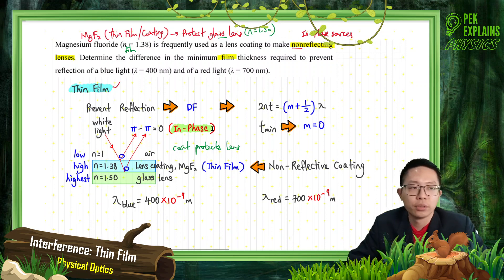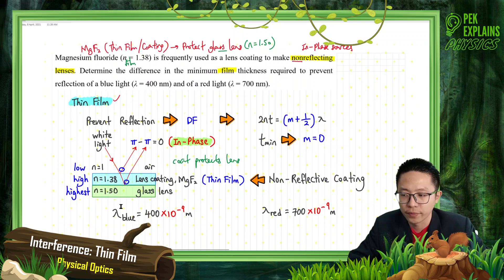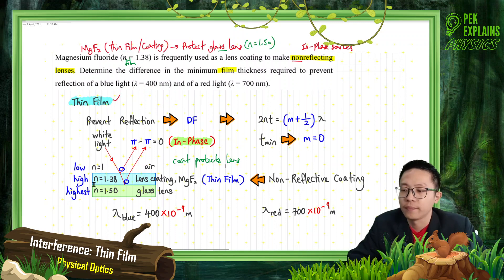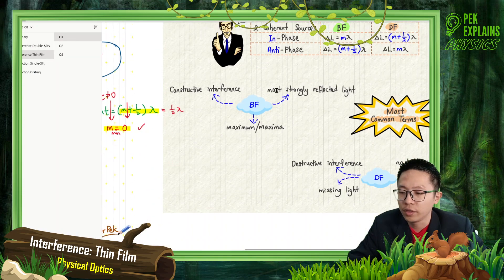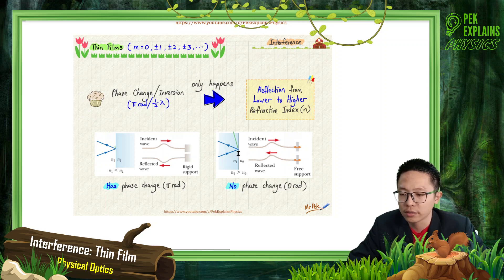So we know the glass lens normally has refractive index 1.50, so the bottom layer is 1.50. This is the low-high-highest category. Because of low-high-highest, both rays have phase change. Phase change happens during reflection from lower to higher refractive index. If you travel from higher to lower refractive index, there is no phase change.